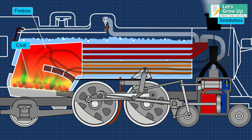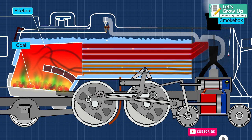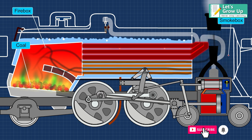The heat produced in the firebox heats the water present in the boiler. The water in the boiler is also heated by the hot gases passing through the long tubes.